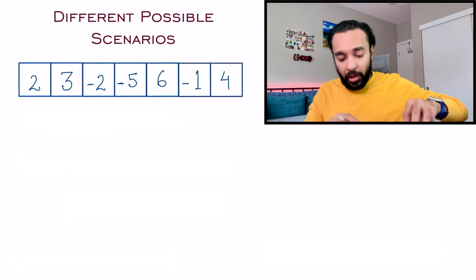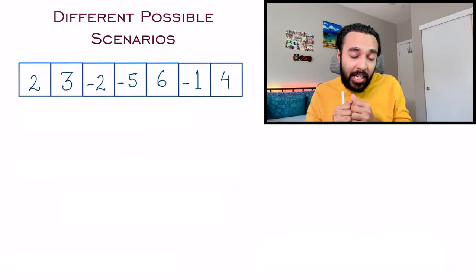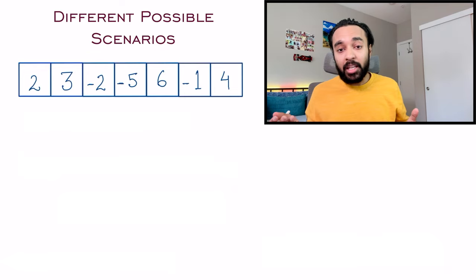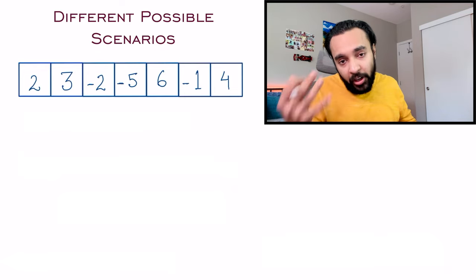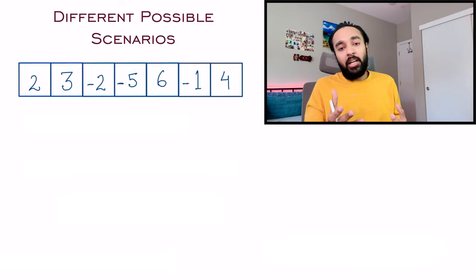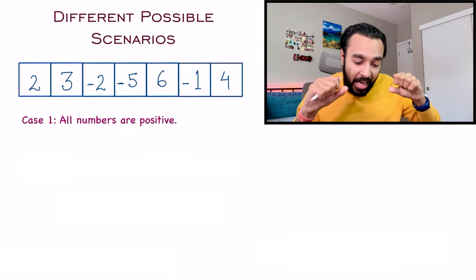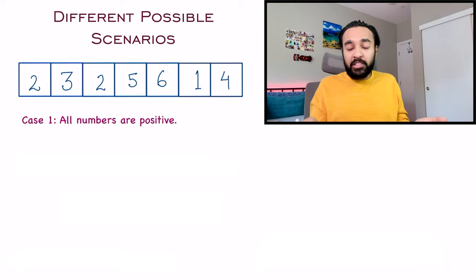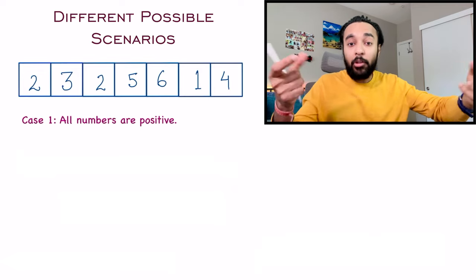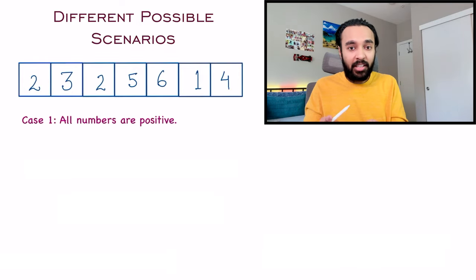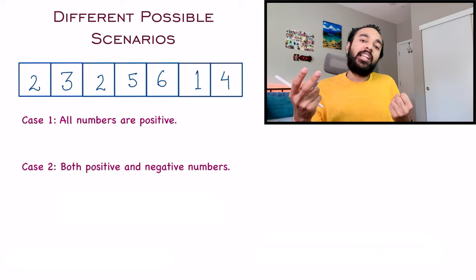So how do you come up with an efficient solution? First, you need to think that since you are talking about subarrays there can be a lot of them. One method you can use is to try to find out all the different possible scenarios your input can come in. The first possible scenario is that all of the numbers are positive. So technically my array has all positive numbers. If you have this array and you have to find the maximum product, you will just multiply all of them and that is your answer.